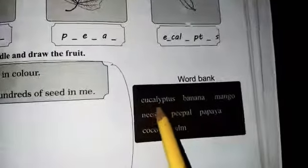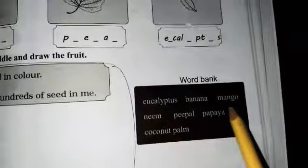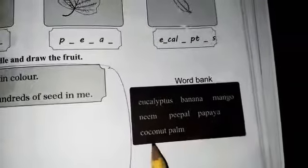There is a word bank. In word bank, the first word is eucalyptus, banana, mango, neem, peepal, papaya, coconut palm.